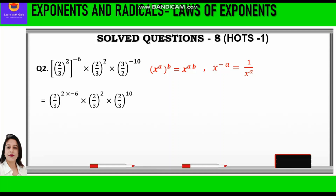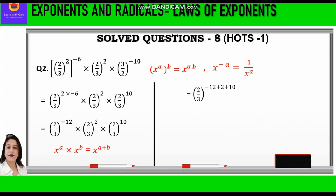Here we have reciprocated 3 by 2 to become 2 by 3. Now 2 into minus 6 is minus 12, so we write 2 by 3 raised to power minus 12, into 2 by 3 raised to power 2, into 2 by 3 raised to power 10. When exponents with the same base are multiplied we add the powers: minus 12 plus 2 plus 10 equals 0. So 2 by 3 raised to power 0, and anything raised to power 0 is 1. The answer is 1.